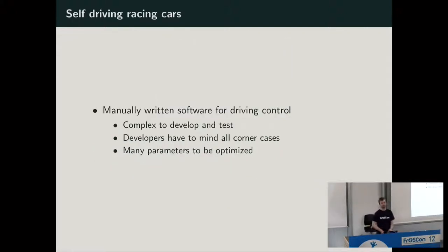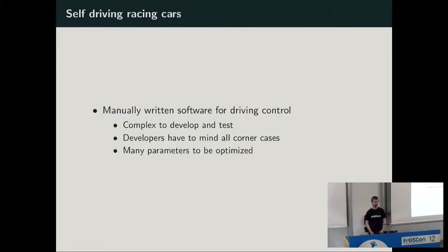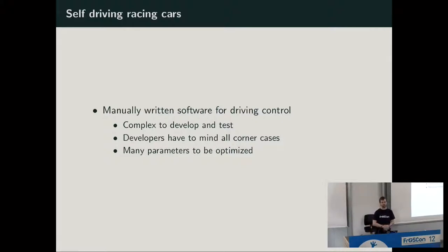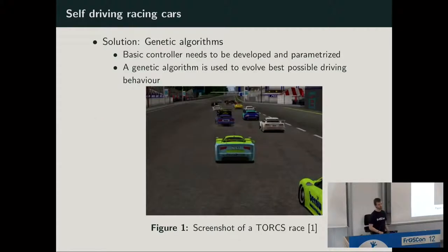Usually when you're writing software for self-driving cars, the software is very complex in development and testing because the developer has to think of so many corner cases. There are so many parameters — like the distance to keep from other cars at a certain speed, or how fast you can go in curves — and these parameters are very hard to test or develop by hand. One possible solution here might be a genetic algorithm.